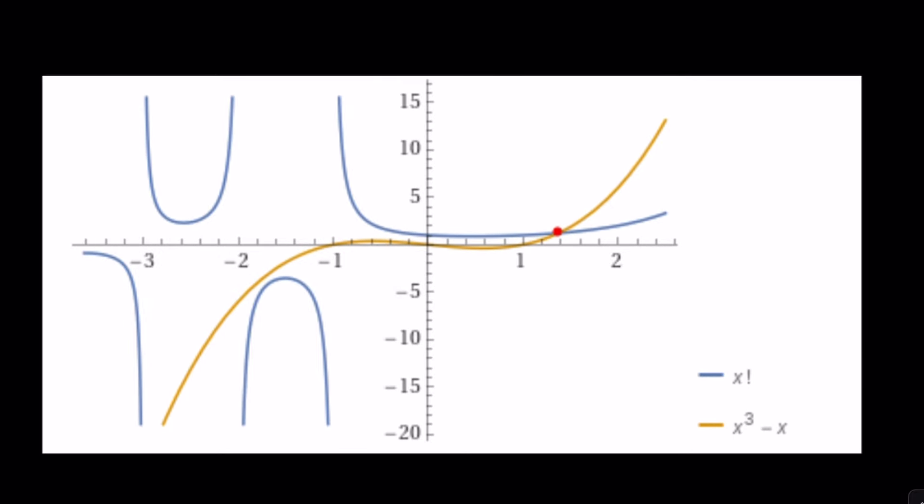So we have the graph of x cubed minus x, and we have the graph of x factorial, which is the blue one. And as you can see here, they seem to be intersecting somewhere between 1 and 2. Again, that is not an integer value, but we're going to be solving for integers.